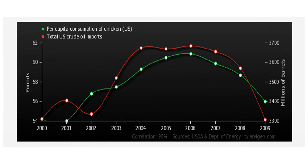The next interesting correlation is between two very unlikely correlated variables: per capita consumption of chicken and total U.S. crude oil imports. That's also interesting — there is a direct correlation and there seems to be a high correlation between these two variables, although they seem to be not related to each other at all.